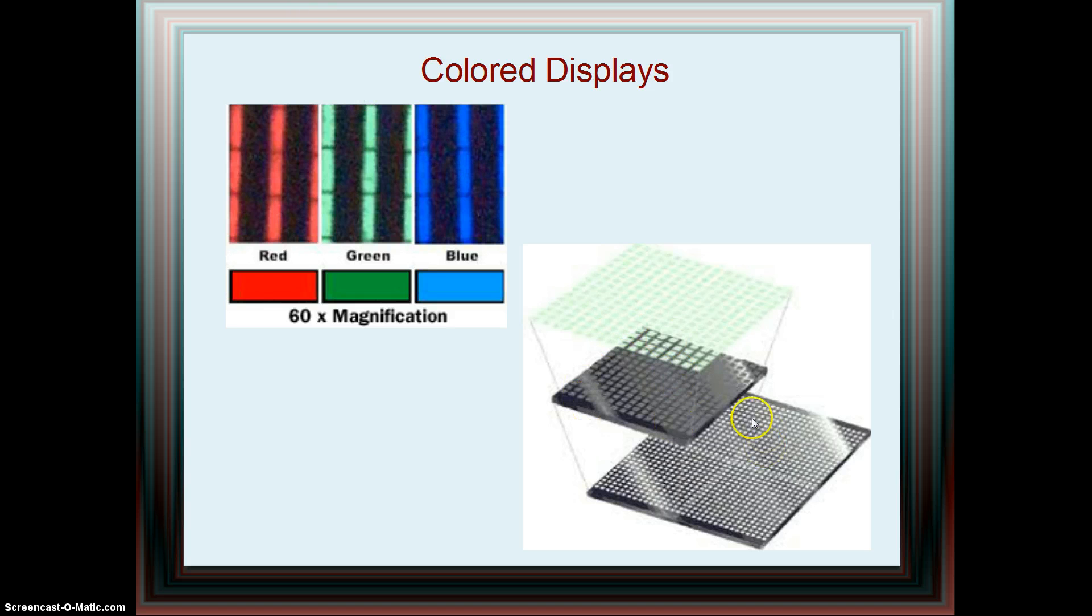Using the transistors for each pixel, the display can control how much power is sent there and how much light passes through the red, green, and blue subpixel filters. This combination of colors can create any color and any shade that the display needs to display.